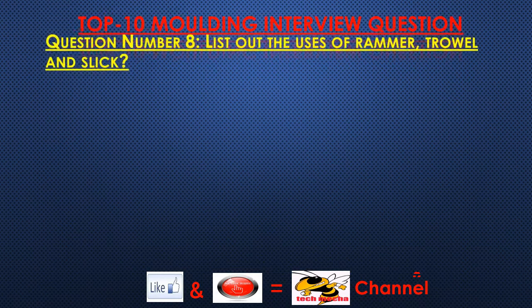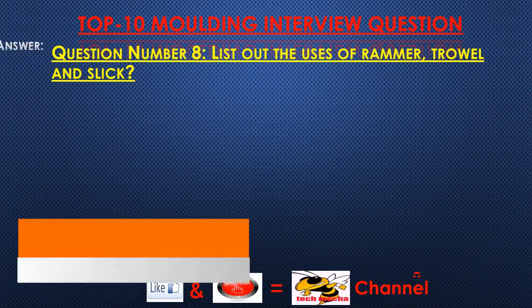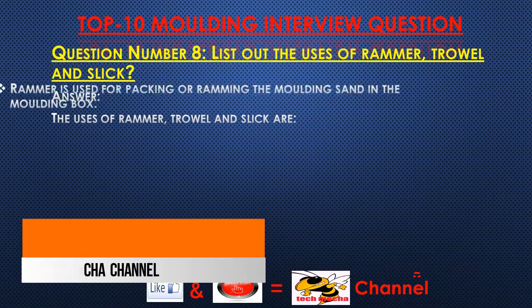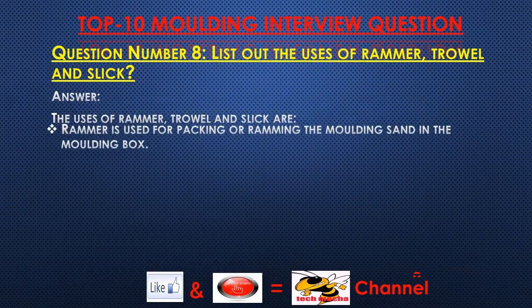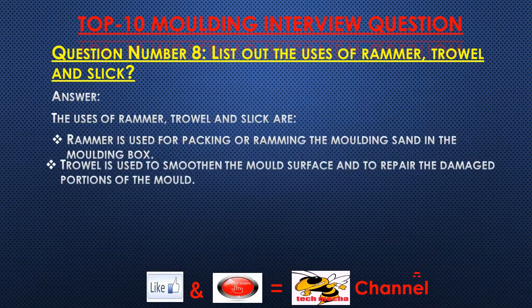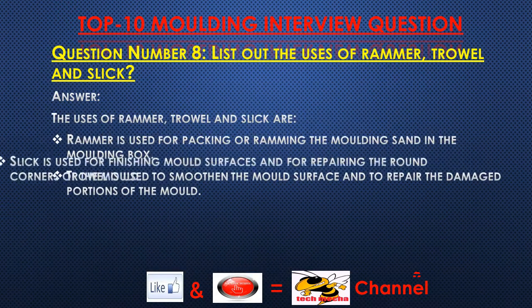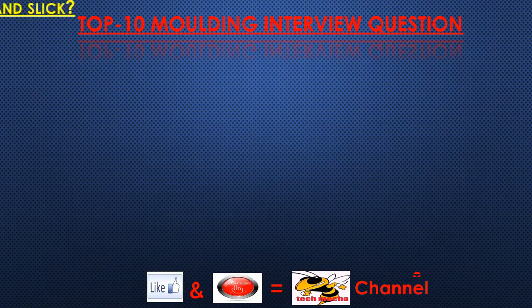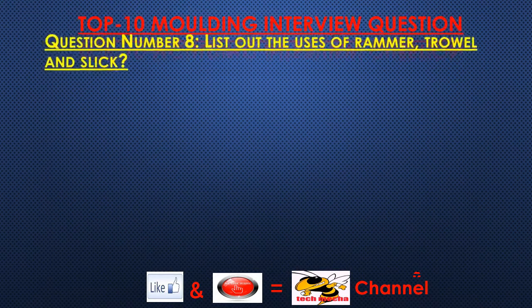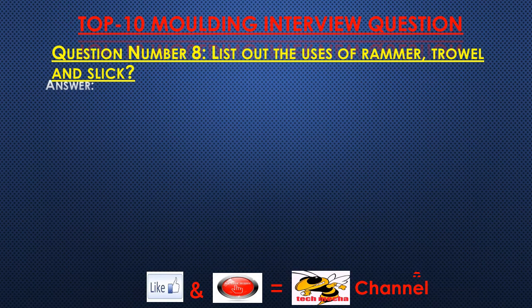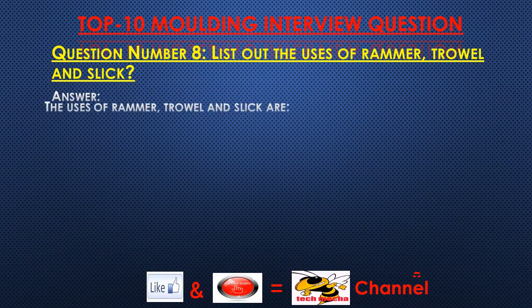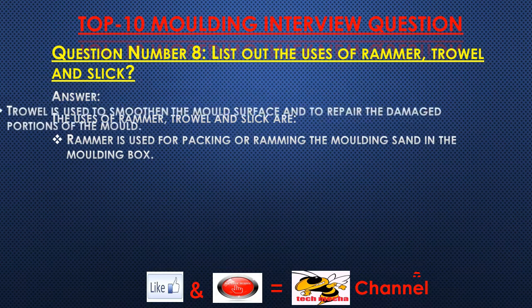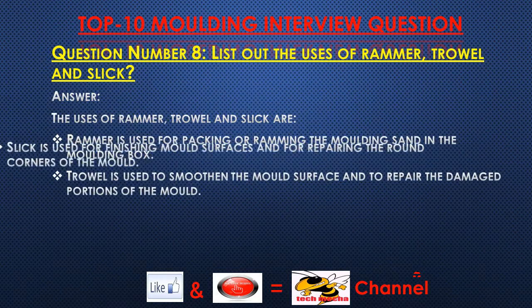Question number eight: List out the uses of rammer, trowel, and slick. Answer: Rammer is used for packing or ramming the molding sand in the molding box. Trowel is used to smoothen the mold surface and to repair the damaged portions of the mold. Slick is used for finishing mold surfaces and for repairing the round corners of the mold.